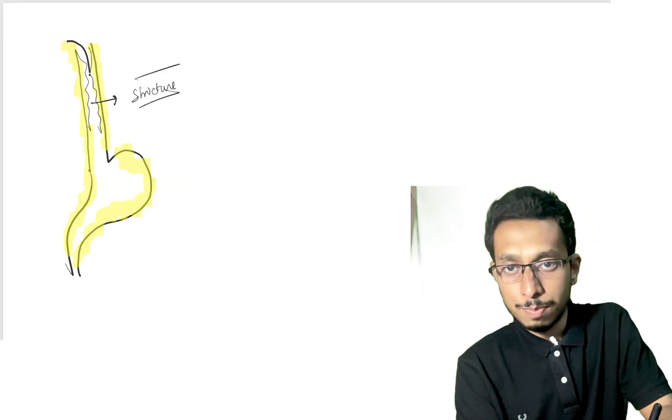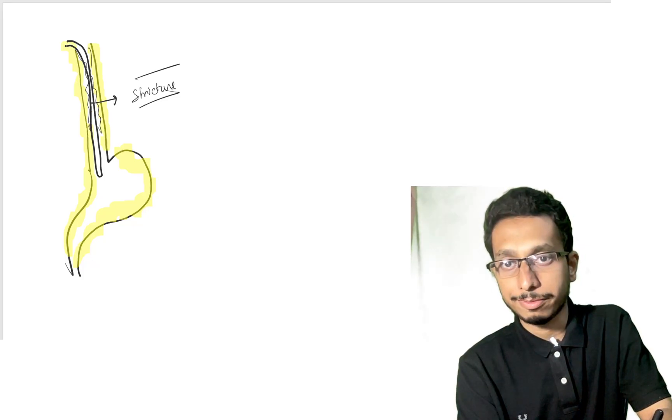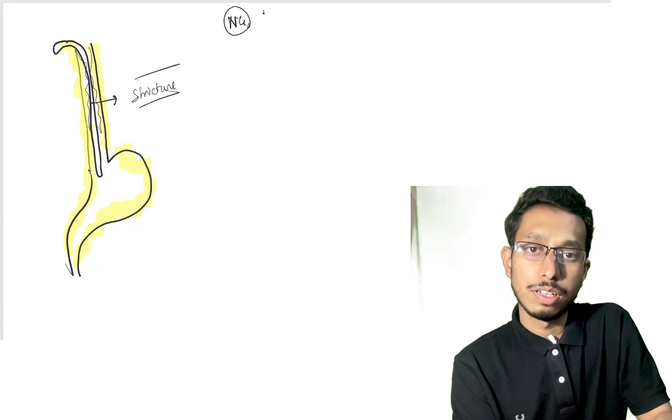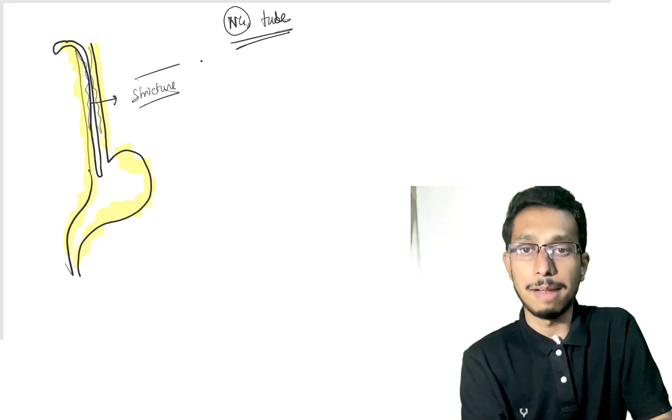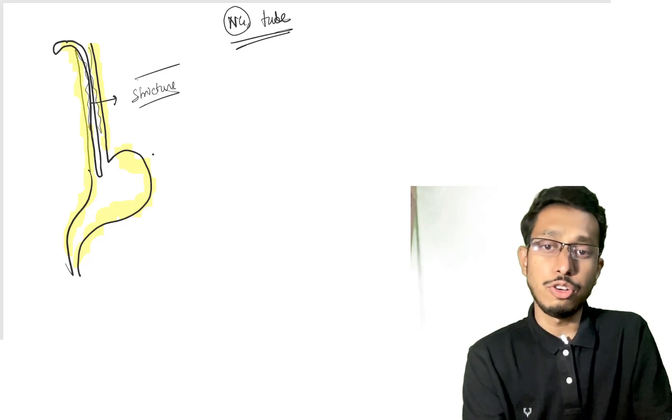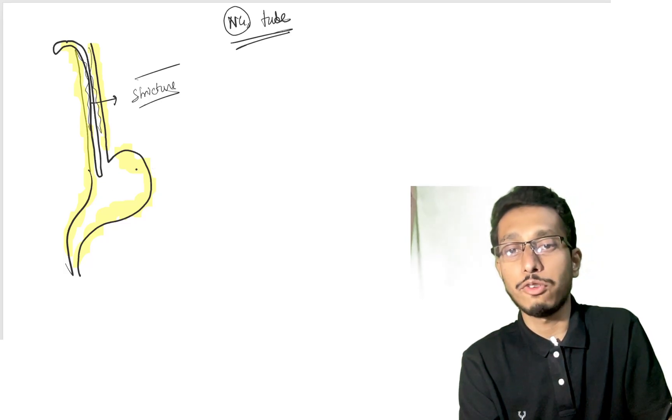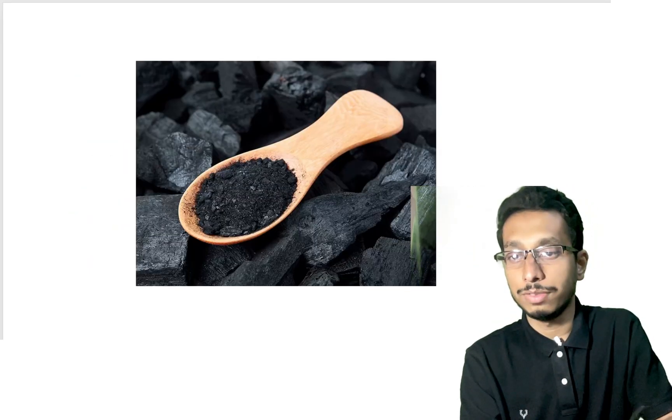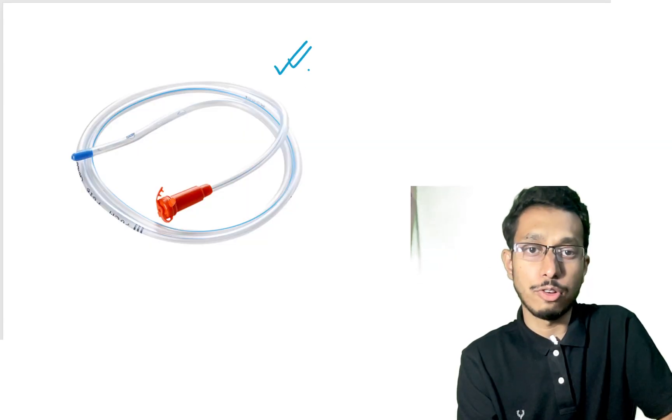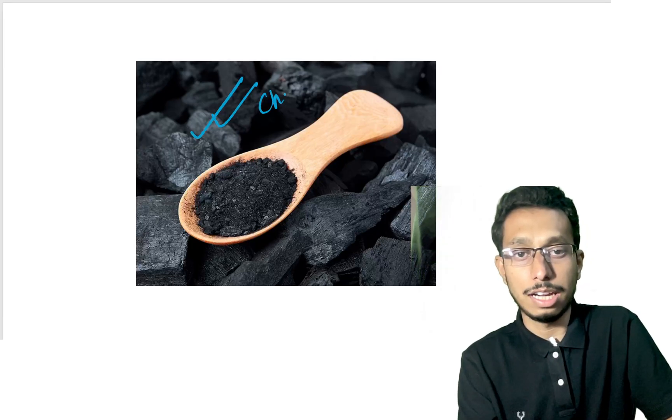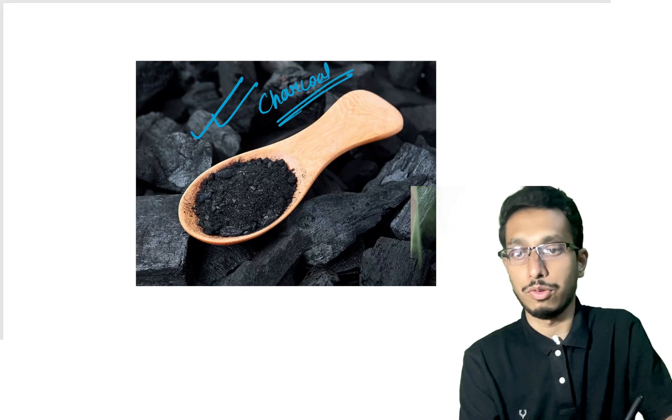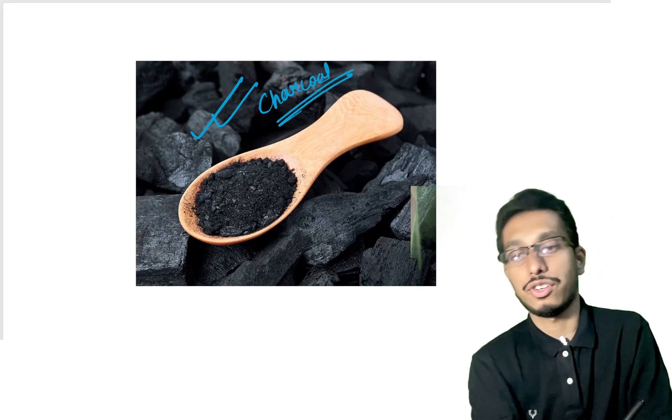For bowel edema, first put an NG tube, which has evidence that it helps in prevention of stricture. In the early phase, decontamination with activated charcoal also has a positive role.